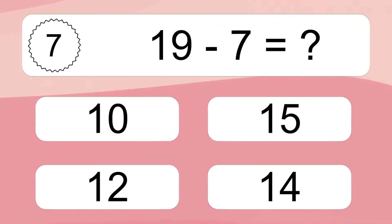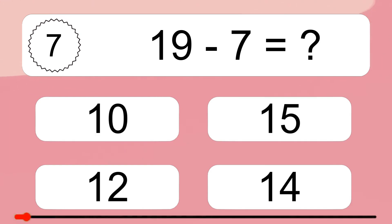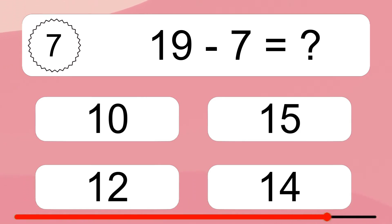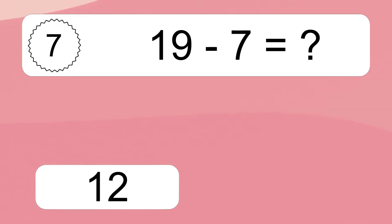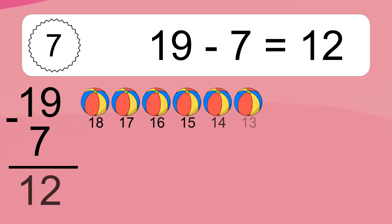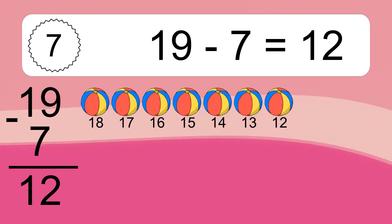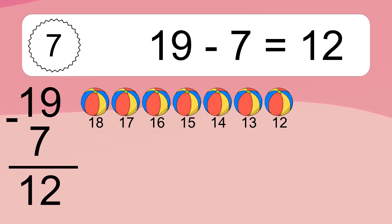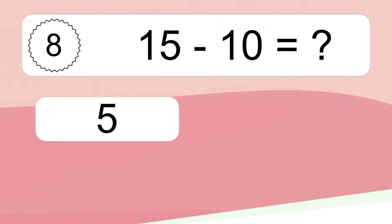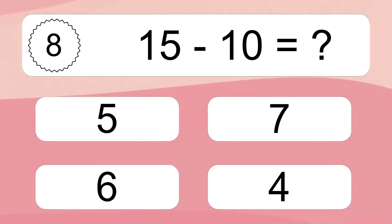19 minus 7 equals what? 19 minus 7 equals 12. Let's count it: 18, 17, 16, 15, 14, 13, 12.